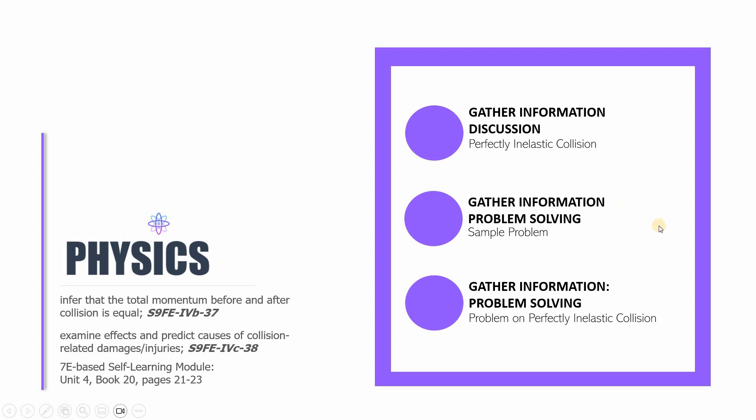But for the meantime, let us have a review of session number 19 starting with the gather information discussion on perfectly inelastic collision. So remember in this kind of collision, kapag nagbanggaan sila, those bodies are gonna be stuck together and they'll have one velocity after the collision. Now we had as well a sample problem and an independent problem solving practice for perfectly inelastic collision.